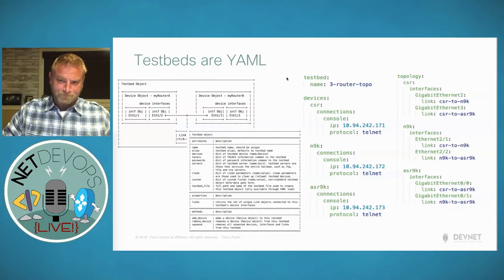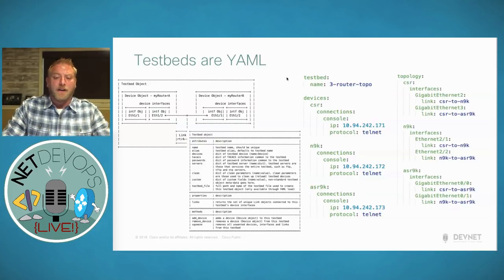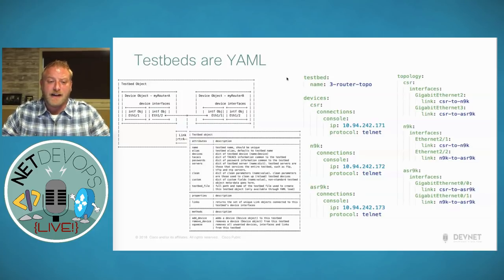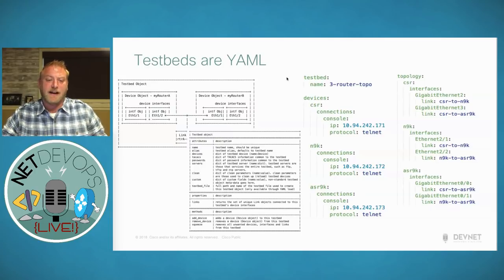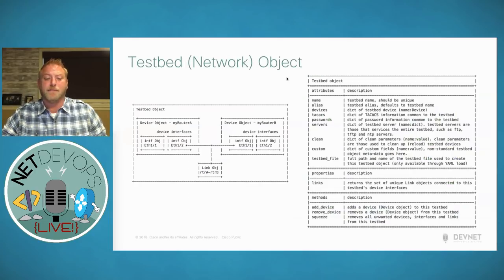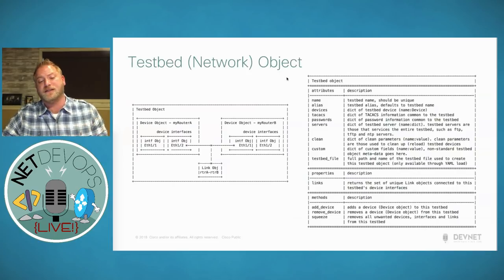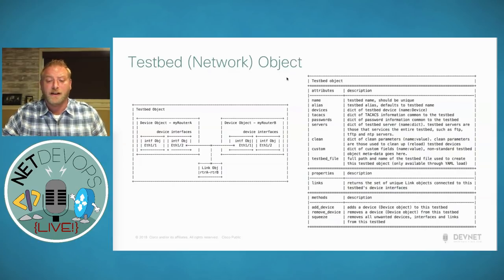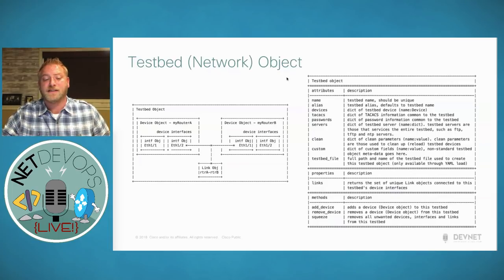What you see on the left here is sort of the online help — because it's Python, we can get all of the attributes and things that are available on these various objects. The testbed object is the highest level. Testbed objects contain a number of device objects, device objects contain a number of interfaces, interfaces contain a link they're associated with, and one or more devices can be connected to a link object — and those can be resolved through a Python API.